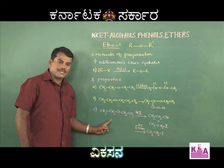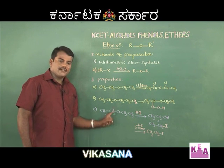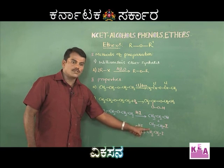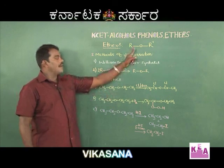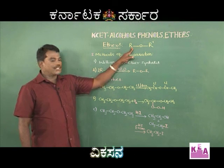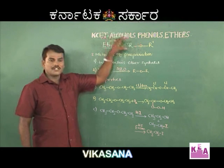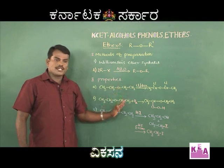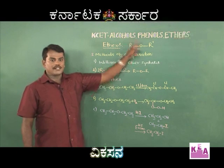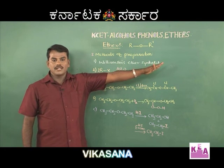For a simple or symmetric ether reacting with HI, you get a mixture of the alcohol and the alkyl iodide. For unsymmetric ethers: if one side is methyl and the other is a primary or secondary alkyl group, the smaller chain alkyl group converts into the haloalkane. If one side is methyl and the other is a tertiary alkyl group, the tertiary alkyl group converts into the haloalkane.